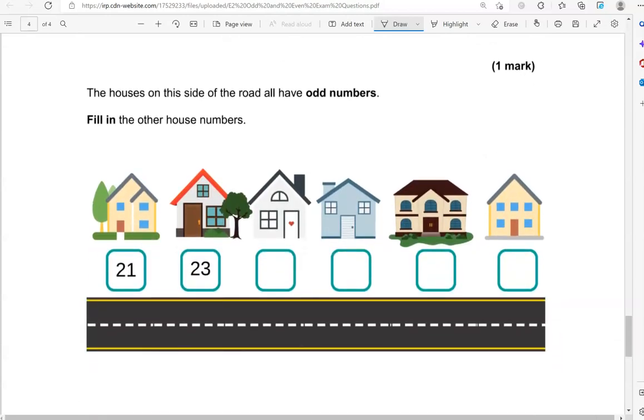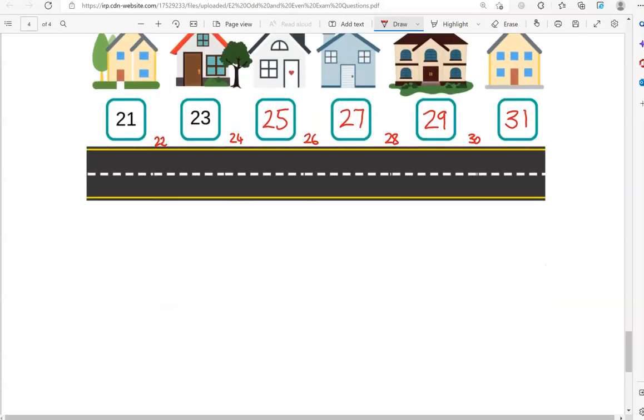The houses on this side of the road all have odd numbers. Fill in the other house numbers. So we've got 21, 23. The next one will be 25. Then 27, 29, 31. Again, feel free to write these numbers in the middle if it helps you at all. And this is the end of the questions.